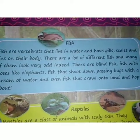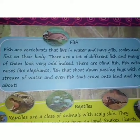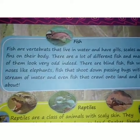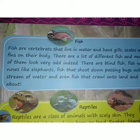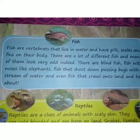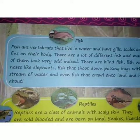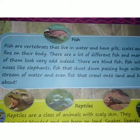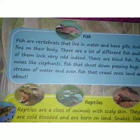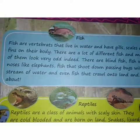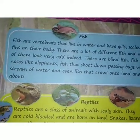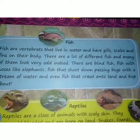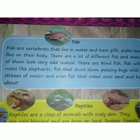Some fish are blind because they live deep under the ocean where there is no sunlight, so they do not need eyes. Some fish shoot water out to hit a nearby bug that is passing by — that bug falls in the water and the fish eats it. Some fish also crawl on land and hop about.